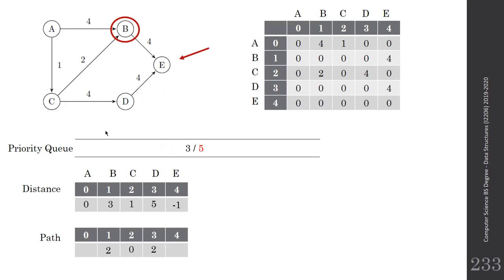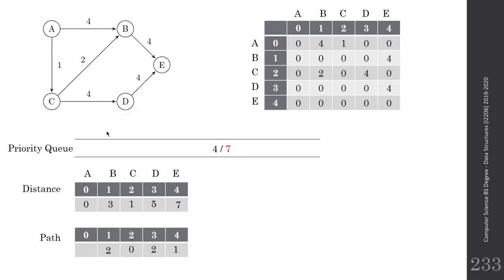C is finished. We take the next element from the priority queue, which is B. B has adjacent vertex E. Distance to E equals distance to B plus 4, which is 3 plus 4 equals 7. The path for E comes from B, vertex number 1. Next we take D, which has adjacent vertex E. Distance to E via D would be 5 plus 4 equals 9, which is greater than 7, so we change nothing.